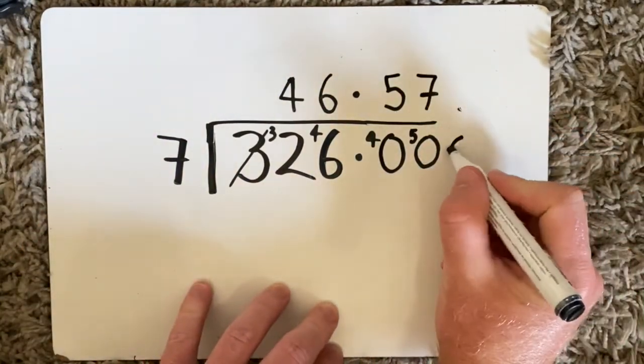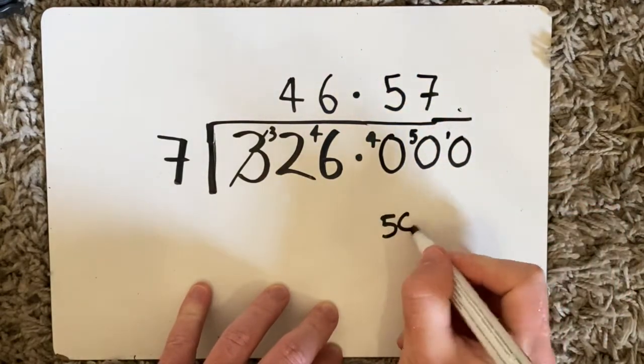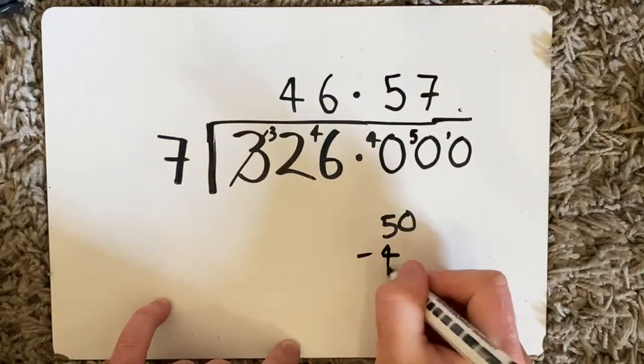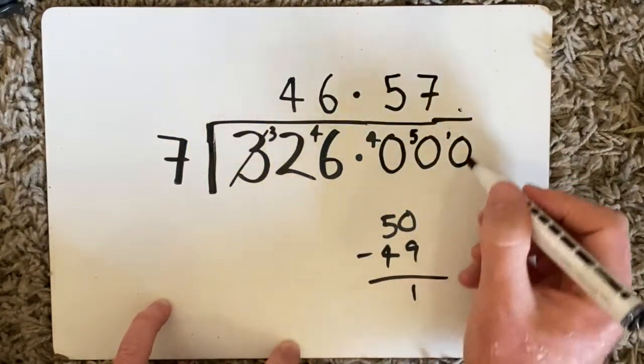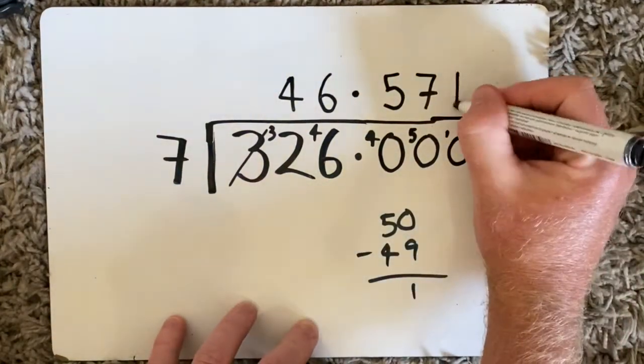This time there's a remainder of 1 because 50, which I had, take away 7 times 7, which was 49, gives me 1. So that remainder 1 goes here. How many 7s in 10? There are 1.